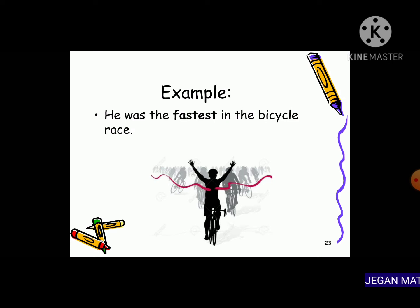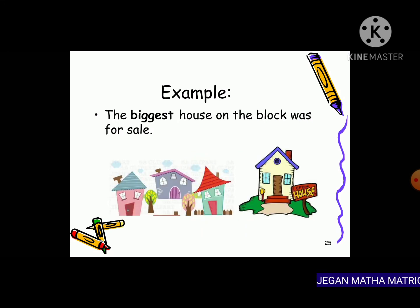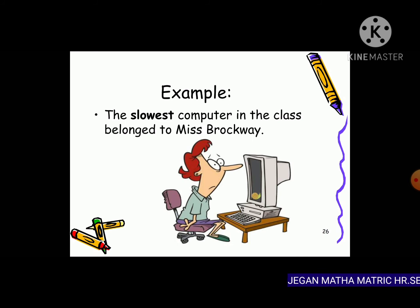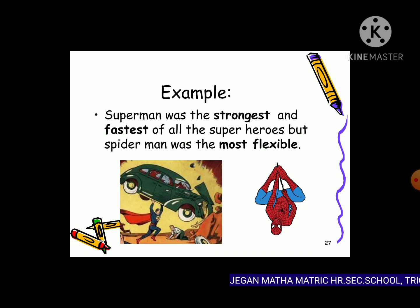Examples using superlative degree: 'He was the fastest in the bicycle race.' 'She was the smartest girl in the class' — smart, smarter, smartest. 'The biggest house on the block was for sale.' 'The slowest computer in the class belonged to Mrs. Brackway.' 'Superman was the strongest' — that is superlative degree.